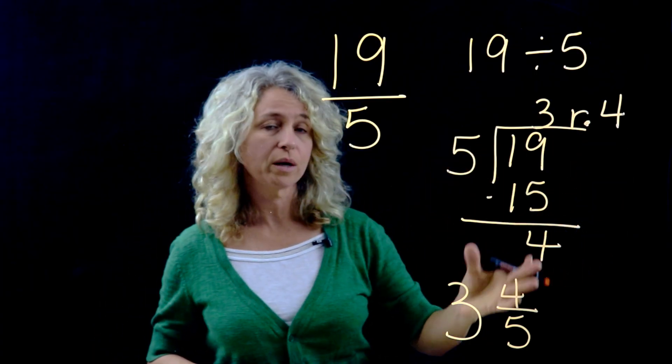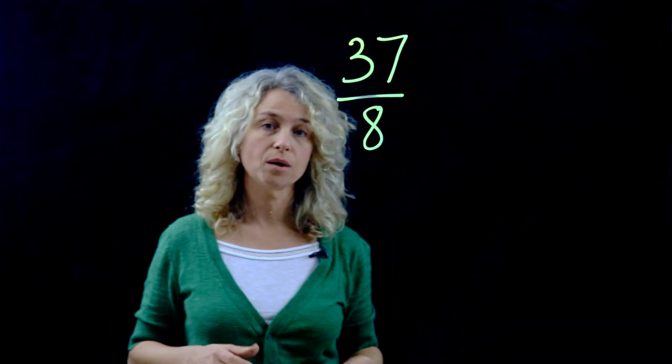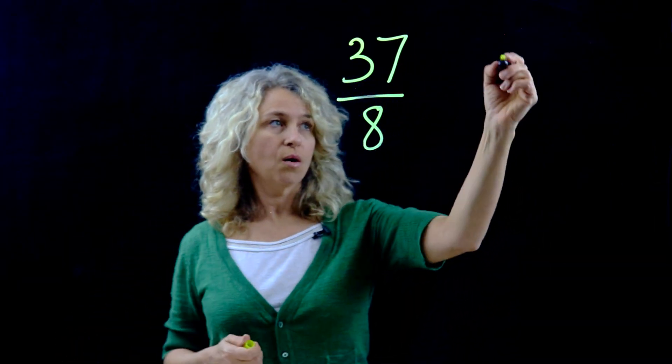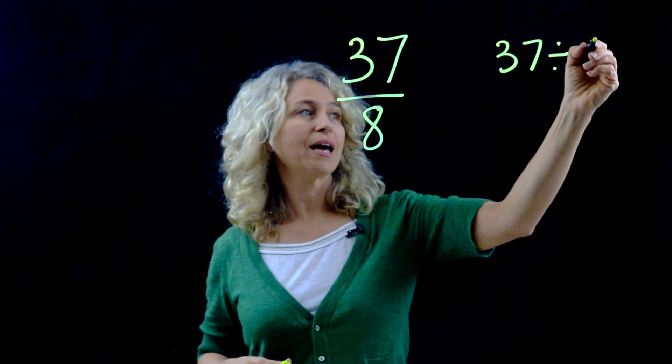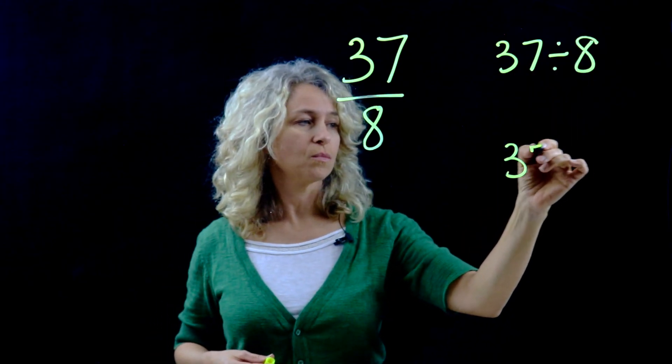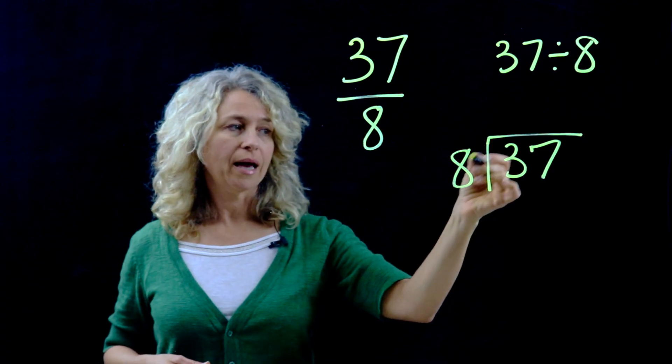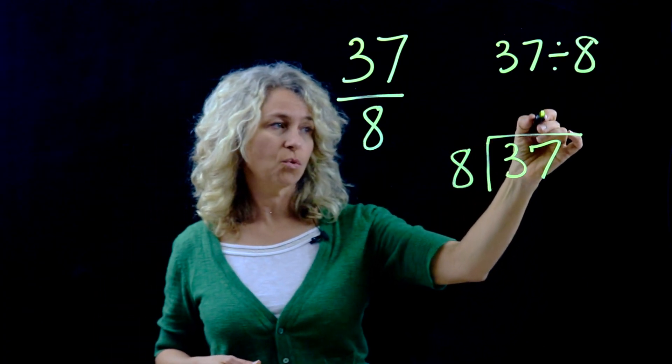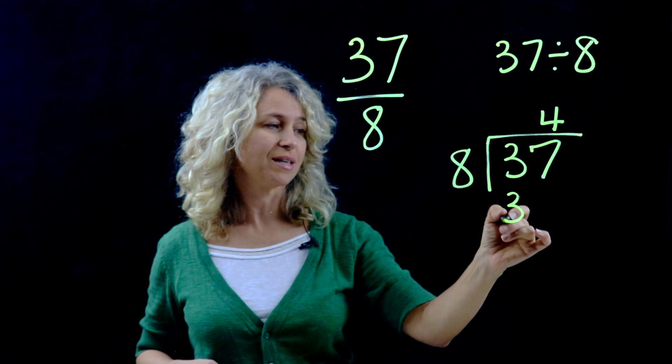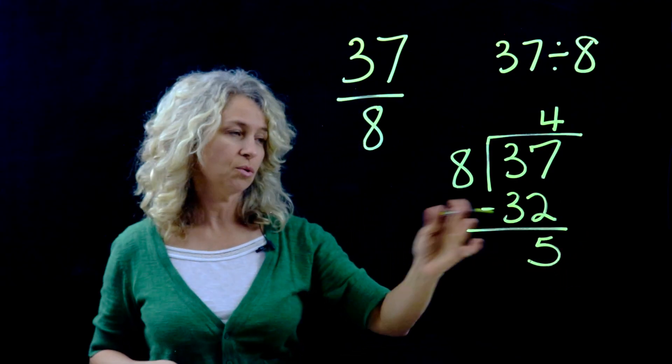And here's our last example, another improper fraction. We know that 37/8 means 37 divided by 8. And so you can do your long division. 8 can go into 37 four times. 4 times 8 is 32, and subtract and get 5.